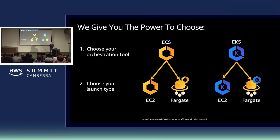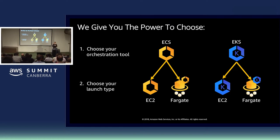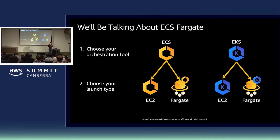To level set, there are several ways to run containers on AWS. You can choose your own adventure and install, manage, and secure your own orchestration tool. Or you can use one of the orchestration tools AWS provides. The first is ECS, Elastic Container Service, available in Sydney, which provides a highly scalable and highly available container orchestration service. If you want to run Kubernetes, you can choose EKS, where AWS secures and maintains the control plane for you. For this session, we are going to focus on how to secure your container environment using ECS and Fargate.